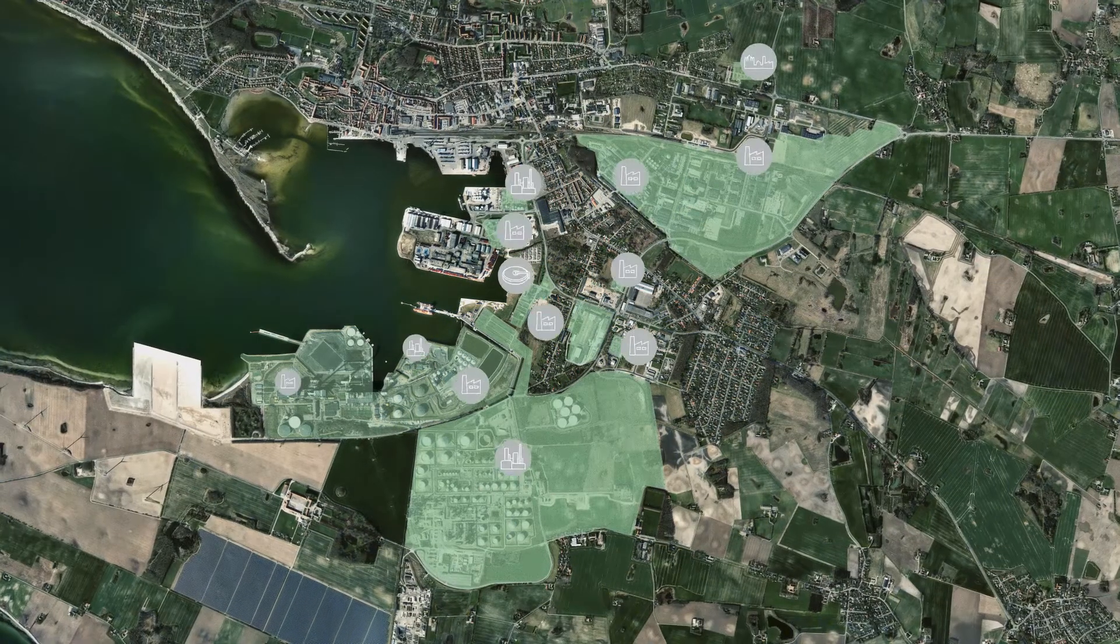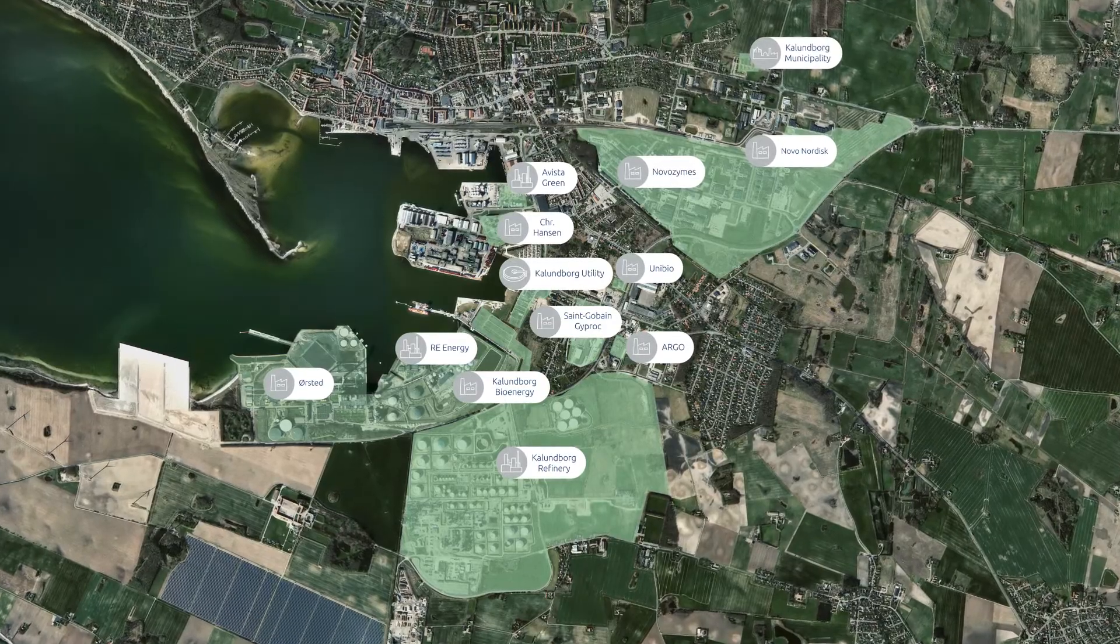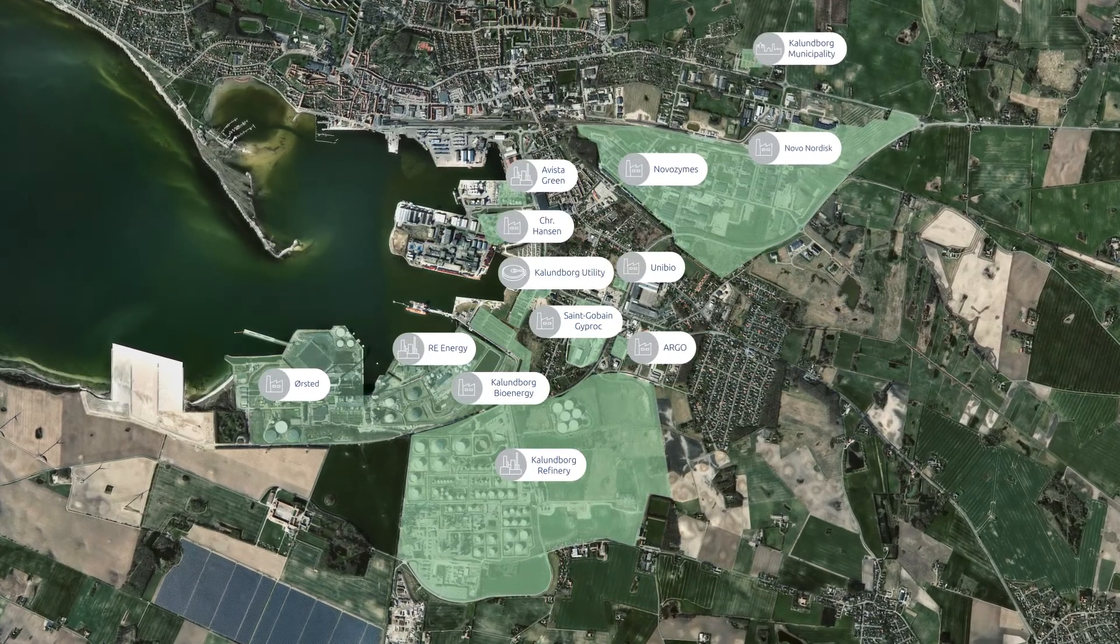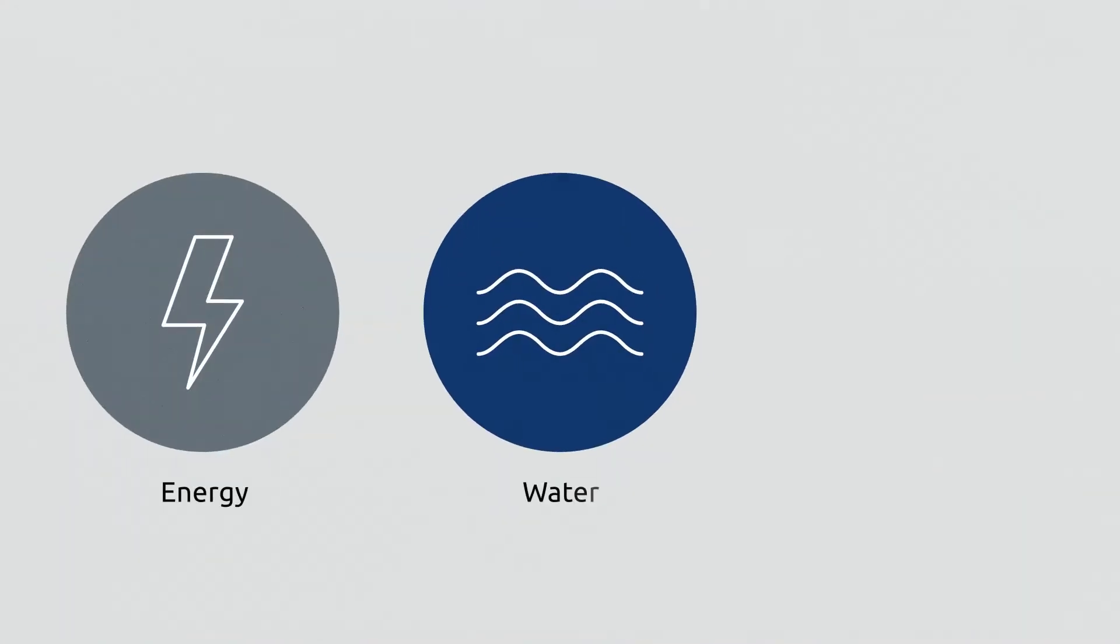Kallenborg's global companies collaborate with local businesses and authorities across sectors to solve some of the biggest challenges we are facing today. Large industrial companies share excess energy, water and materials, so less goes to waste.